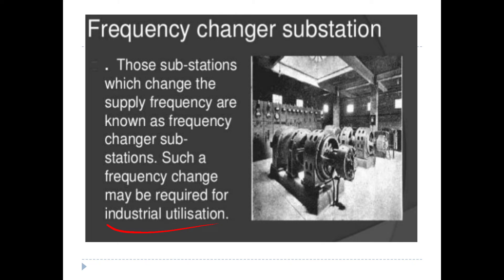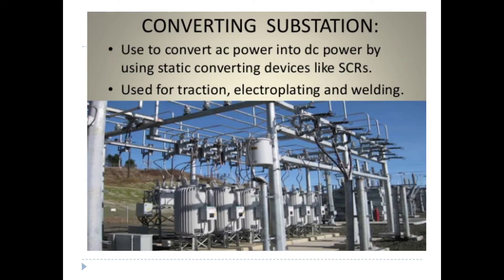Frequency Changer Substation is used for the change of the supply frequency. The frequency changer substation is designed for industrial substation applications. The Converting Substation converts AC power to DC power. Static converting devices such as SCRs are used to convert AC power to DC power. This is used in traction, electroplating, and welding applications. This is the Converting Substation.